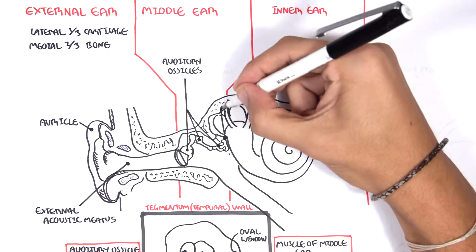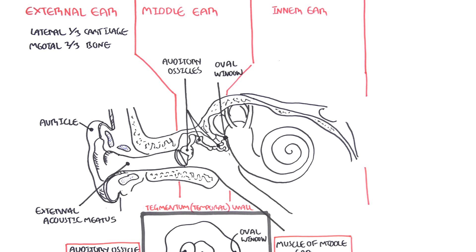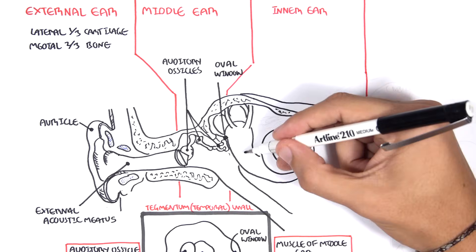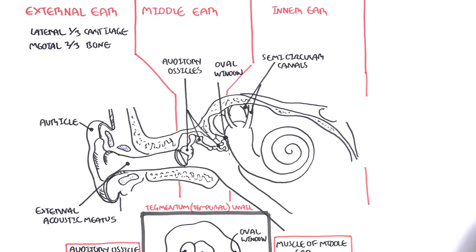The inner ear receives mechanical signals, vibration signals from the stapes bone through the oval window. And the inner ear is made up of a shell looking thing where we have three semicircular canals.